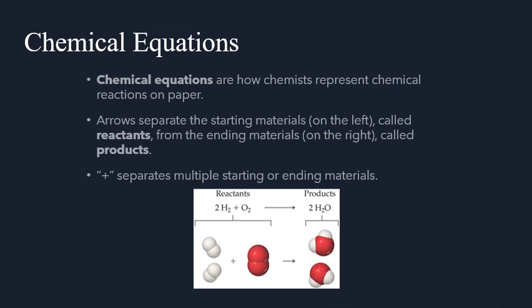We had the production of a gas, and then finally, we had color changes that could take place — excluding changes that are just based off of pH with an indicator. So when we look at our chemical equations, that is just simply a way that chemists can represent chemical reactions that are taking place on paper.